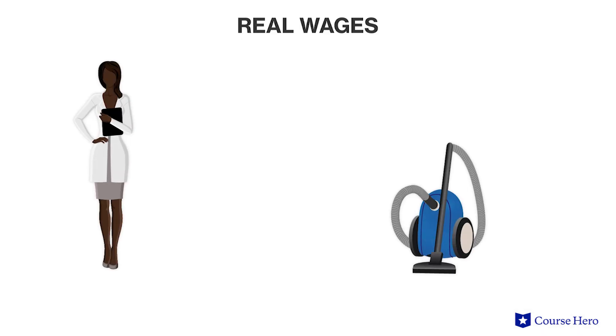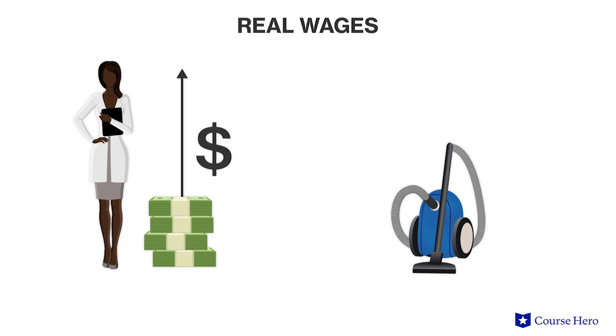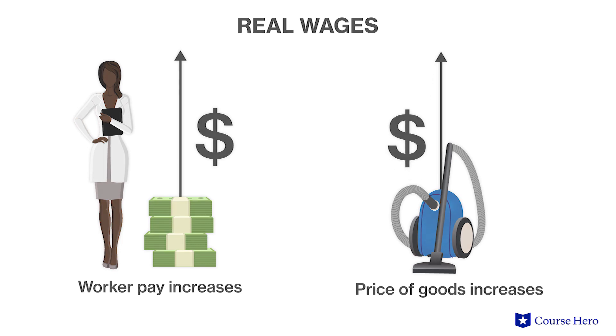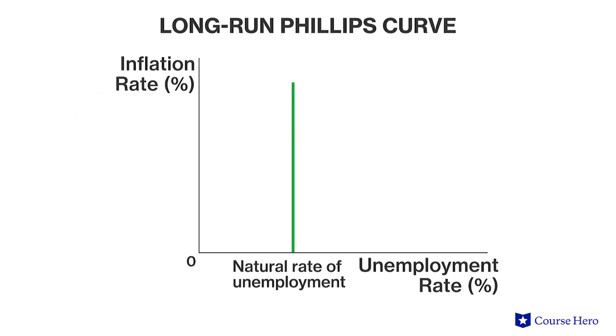Phelps and Friedman argued that rational, well-informed workers and employers consider real wages when determining the quantity of labor to supply. Real wages represent the inflation-adjusted purchasing power of nominal wages. When workers expect inflation, workers ask for higher wages and firms raise prices, so actual inflation inevitably equals the expectation of it. Actual inflation equals expected inflation, and the long-run Phillips curve is vertical because the economy is at its potential output or full capacity. The more quickly workers anticipate future inflation, the sooner the economy will settle at the natural rate of unemployment.